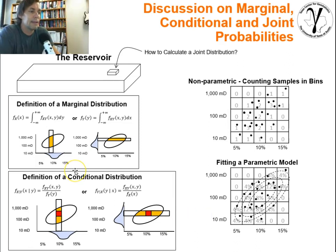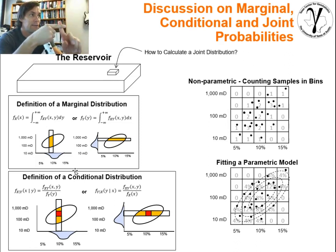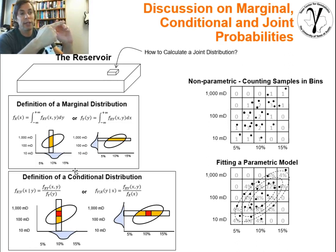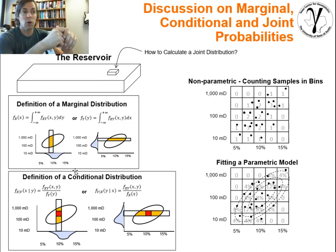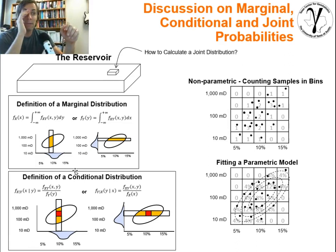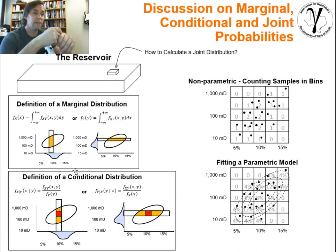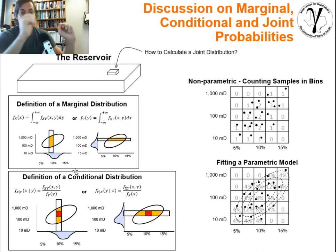With that, we finish this short discussion about univariate and bivariate, marginal, conditional, and joint distributions and probabilities. We've shown how to move between them: calculating the marginal from the joint, using the marginal and joint to get the conditional, and the idea of directly assessing the joint from data via counting versus fitting a parametric model. I hope this was helpful — this is the end of the discussion.